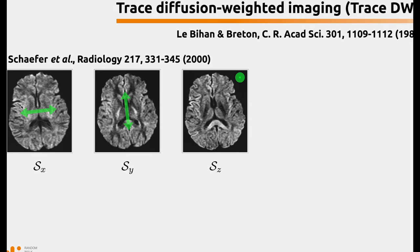Here you have the Sx signal that is linked to the gradient along the x-direction, or the left-right direction; Sy as a gradient along the anterior-posterior, or y-direction; and a z-gradient along the inferior-superior, or z-direction. In this case you can see that the corpus callosum, the optical tracts, and the corticospinal tracts are dark.